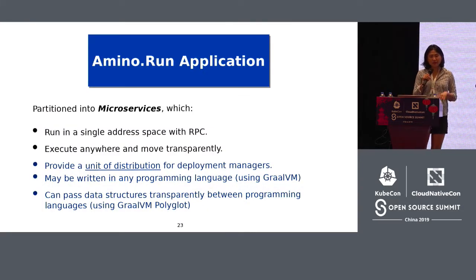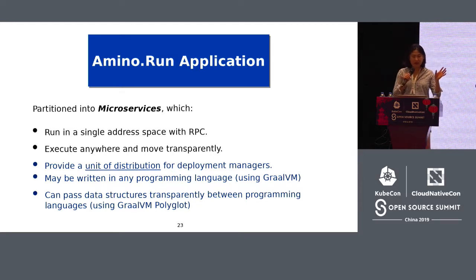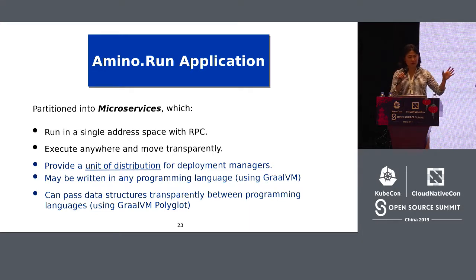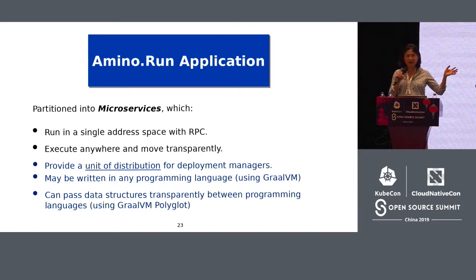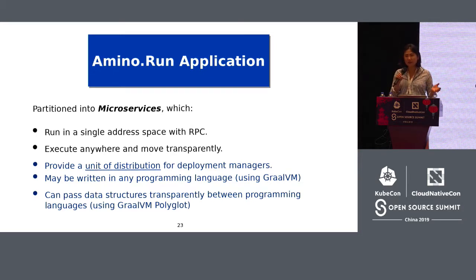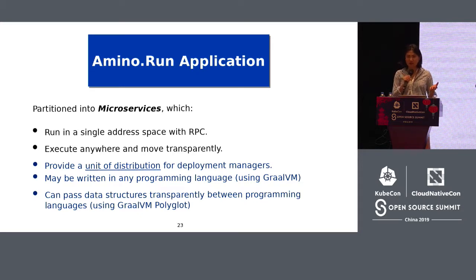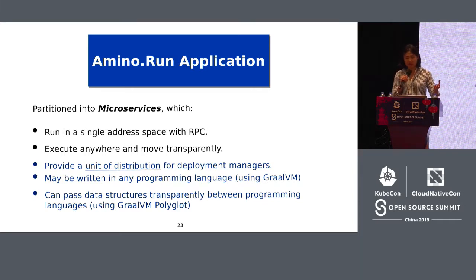Going back to the top level of the Amino architecture, Amino applications are fundamentally large microservices. They run in a single address space, so any Amino Run microservice can call any other Amino Run microservice. But they can execute anywhere and move transparently to the application itself.